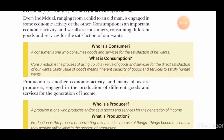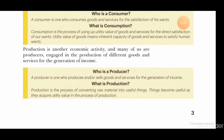First, we learn about the consumer — one who uses goods and services for satisfaction. Consumption is when we use goods and services and derive satisfaction from them. For example, if you went to the canteen and ate a burger, you become a consumer, and eating the burger is called consumption. Third is the producer, who produces and sells goods and services.